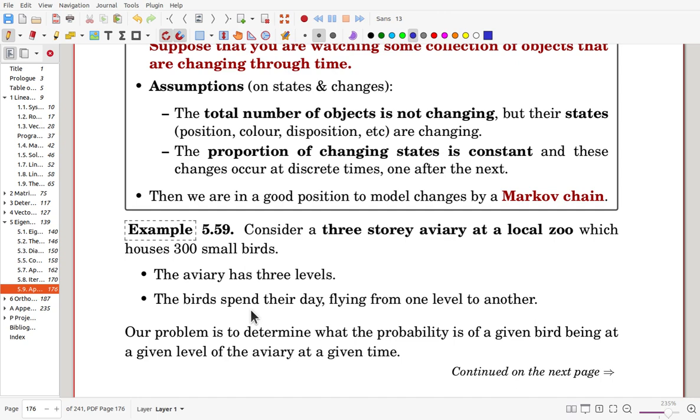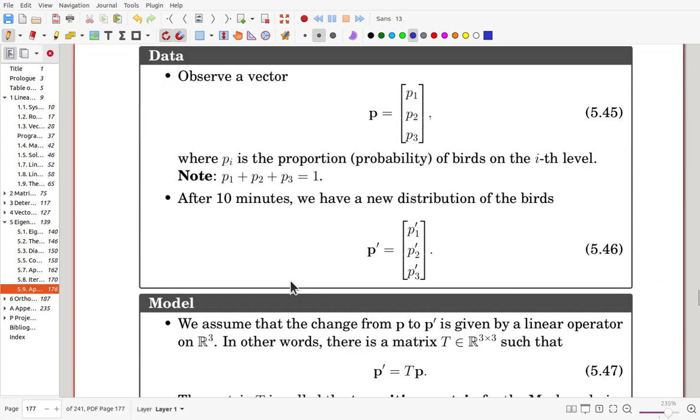Here our problem is to determine what the probability is of a given bird being at a given level of the aviary at a given time. To model a Markov chain, we need a delta.